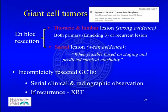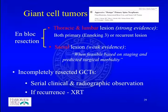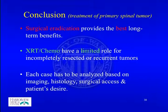For giant cell tumors, en bloc resection is recommended for both thoracolumbar and sacral lesions, though evidence for sacral lesions is weak. For incomplete resection, serial clinical and radiographic observation is needed, and if there is recurrence, radiation is the only choice. In general, surgical eradication provides the best long-term benefit for primary spinal tumors. Radiation and chemotherapy have a very limited role in incomplete resection or recurrent tumors, but each case must be analyzed based on imaging, histology, surgical access, and patient preference.